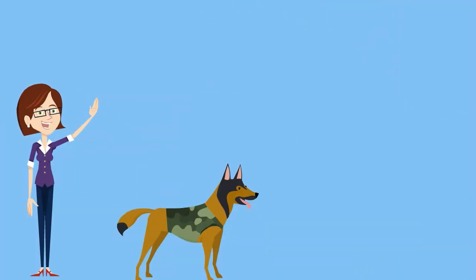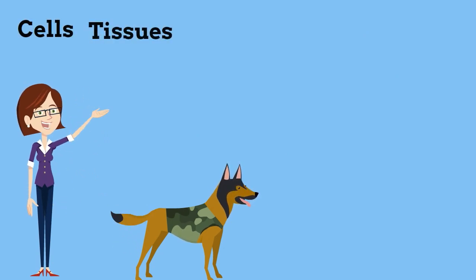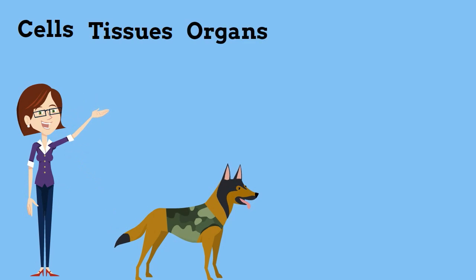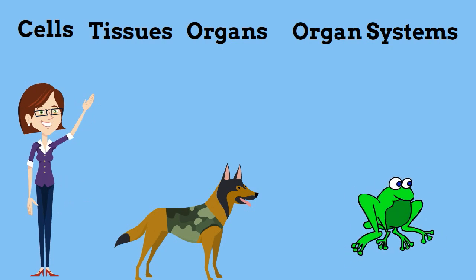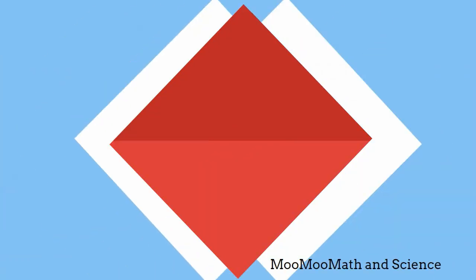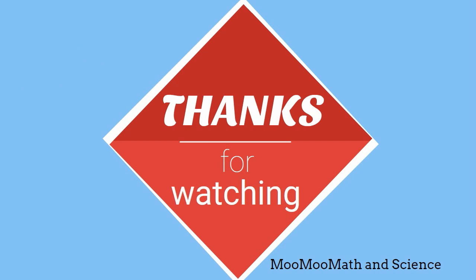In summary, many multicellular organisms have cells that create tissues, tissues create organs, organs create organ systems, and organ systems create organisms. Thanks for watching. MooMoo Math and Science uploads a new math or science video every day.